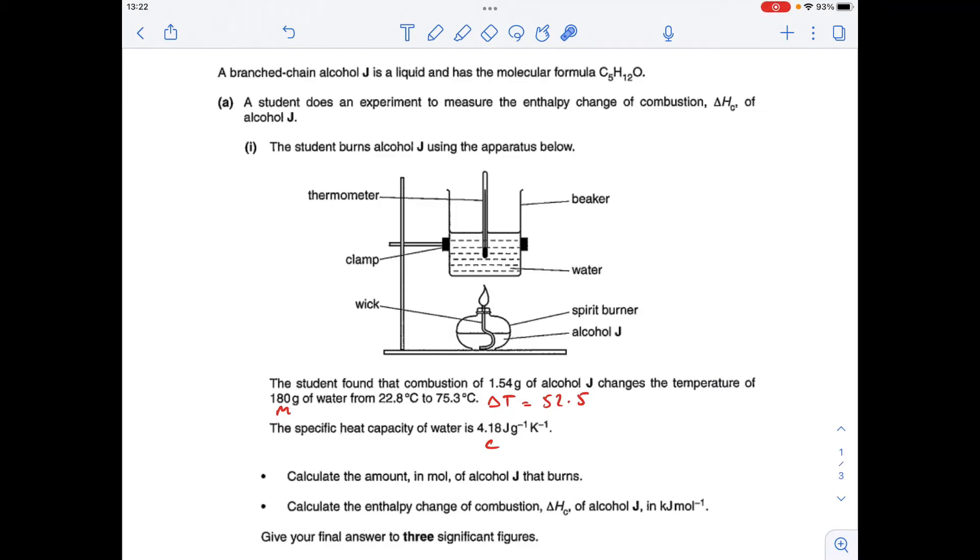From the information, the M is 180 grams - obviously that's the mass of water in the beaker, not the mass of fuel burned. C is the specific heat capacity of the water, and delta T is the difference in those two temperatures.